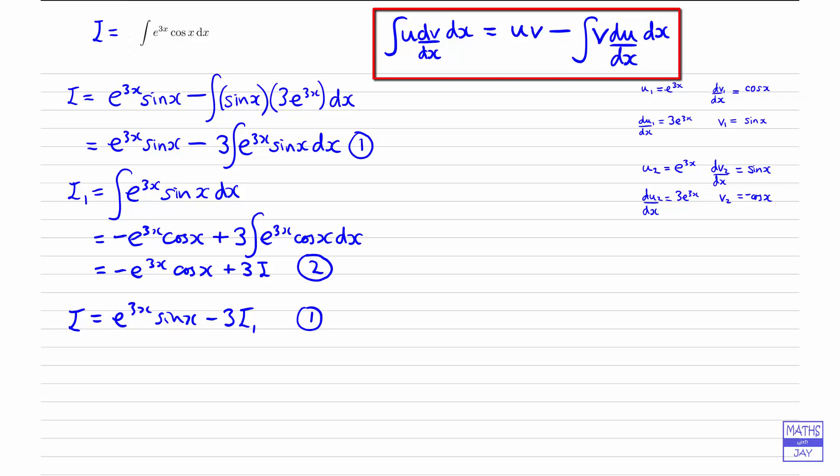So we can now see that we can substitute from two into one. So we've just found that integral i1 is minus e to the 3x cosx plus 3i. So that can go in here. And remember, what we're trying to do here is find the integral i. And now you can see that we're going to be able to do it, because we now don't have any integral symbols left. It's just a whole load of algebra where i can be found in terms of x. Well, in terms of e to the 3x sinx and cosx, we just need to do a little bit of multiplying out and rearranging, and we'll be there.